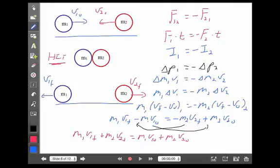m1 v1 final plus m2 v2 final equals m1 v1 initial plus m2 v2 initial. Let's look a little more closely at what this says. This says if I add together the momentum of the first and the momentum of the second after something happened, it equals when I add together the momentum of the first plus the momentum of the second before something happens.